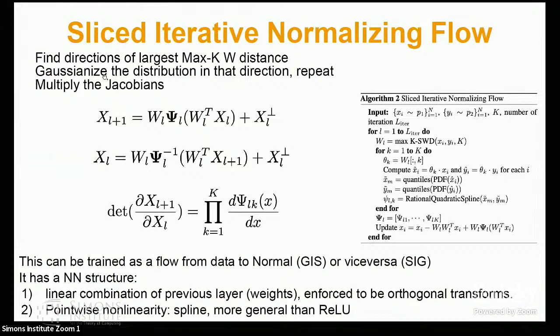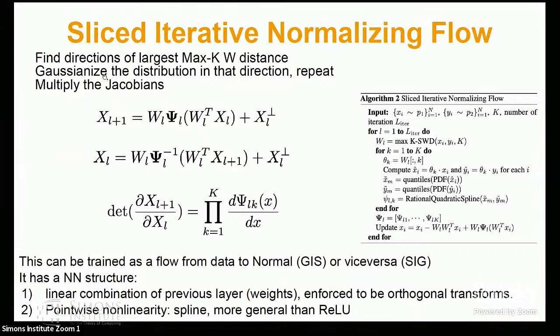Does it work? It actually works very well, even in high dimensions. Here are some examples of sampling after training on Fashion MNIST — you can see after one iteration, after ten iterations, and after a few hundred iterations you get pretty good fashion clothing images. Here are celebrity images as well. And here are various samples from training on MNIST, Fashion MNIST, CIFAR, and CelebA — high-dimensional examples, MNIST at 784 dimensions, the others around 3000. This clearly works as an approximation of very high-dimensional probability distributions.